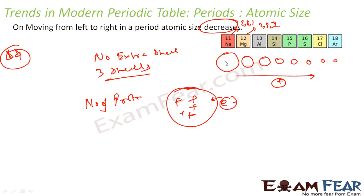Since the power is more, it attracts electrons more towards itself and thus the atom shrinks. For example, this element has 11 protons, this one has 12 positive, 13 positive, 14 positive, 15 positive, 16 positive, 17 positive, 18 positive. The shells are not increasing — still the same. So 11 protons cannot attract electrons as strongly, so the size is more. But as the charge increases, electrons are attracted a little bit closer each time, and thus the size decreases.